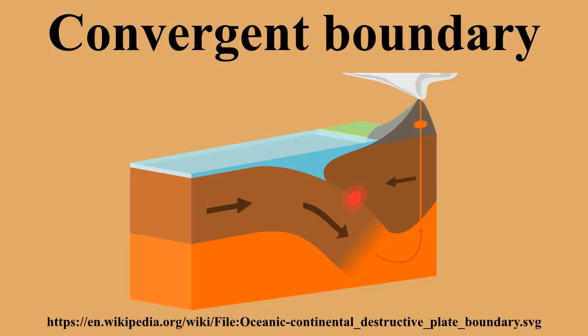When two plates with oceanic crust converge, they typically create an island arc as one plate is subducted below the other. The arc is formed from volcanoes which erupt through the overriding plate as the descending plate melts below it. The arc shape occurs because of the spherical surface of the Earth. A deep oceanic trench is located in front of such arcs where the descending slab dips downward, such as the Mariana Trench near the Mariana Islands.